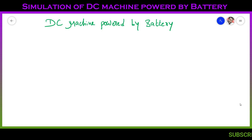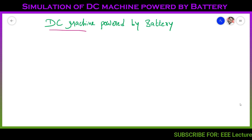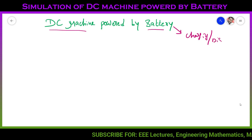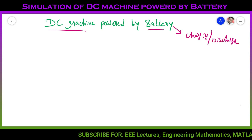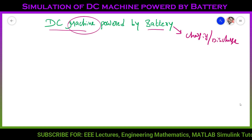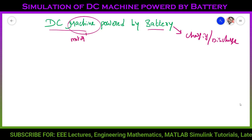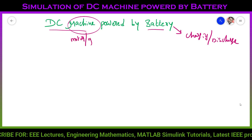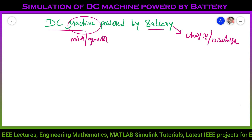In this video, I will explain the designing and simulation of a DC machine powered by battery. Here battery means I will design battery charging and discharging states. And also here DC machine means this machine will react as a motor, and I will also explain DC generator mode.